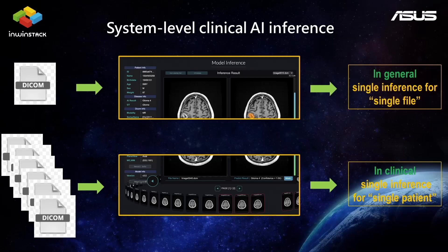And how about in clinical? When we take an MRI image, it will contain some series and also have up to hundreds of DICOM files in each, which means we need to merge all the single results into one AI inference. So the difference of the AI results in clinical is that the single inference result is for a single patient.